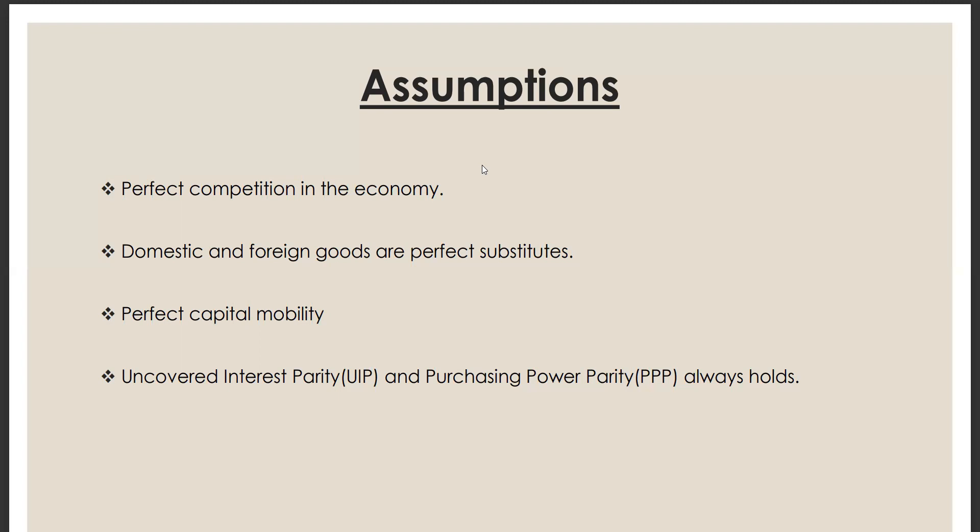Uncovered interest parity and purchasing power parity PPP always holds. UIP is a theory suggesting that interest rate differentials between two countries should be equal to the expected change in exchange rate between their currencies in a perfectly competitive financial market with perfect capital mobility. UIP would always hold. Purchasing power parity posits that over time exchange rates should adjust to ensure that identical products should have the same price when converted to a common currency.